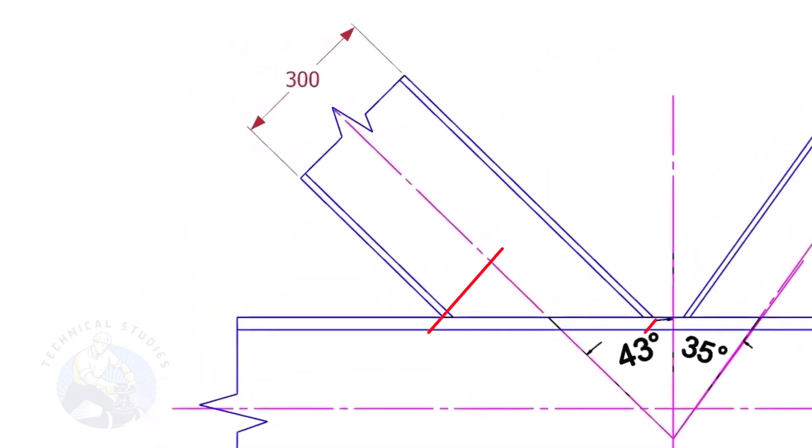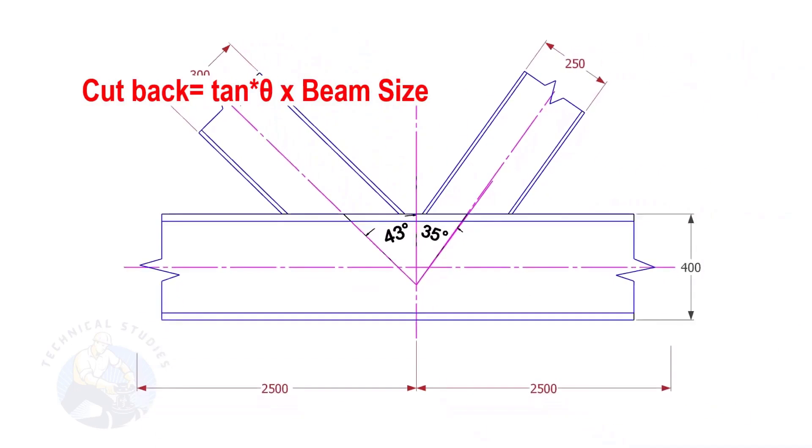Let us calculate the cutback of this beam. The formula to calculate the cutback is tan degree multiplied by the size of the beam. If the including angle is 43 degree, and the size of the beam is 300.